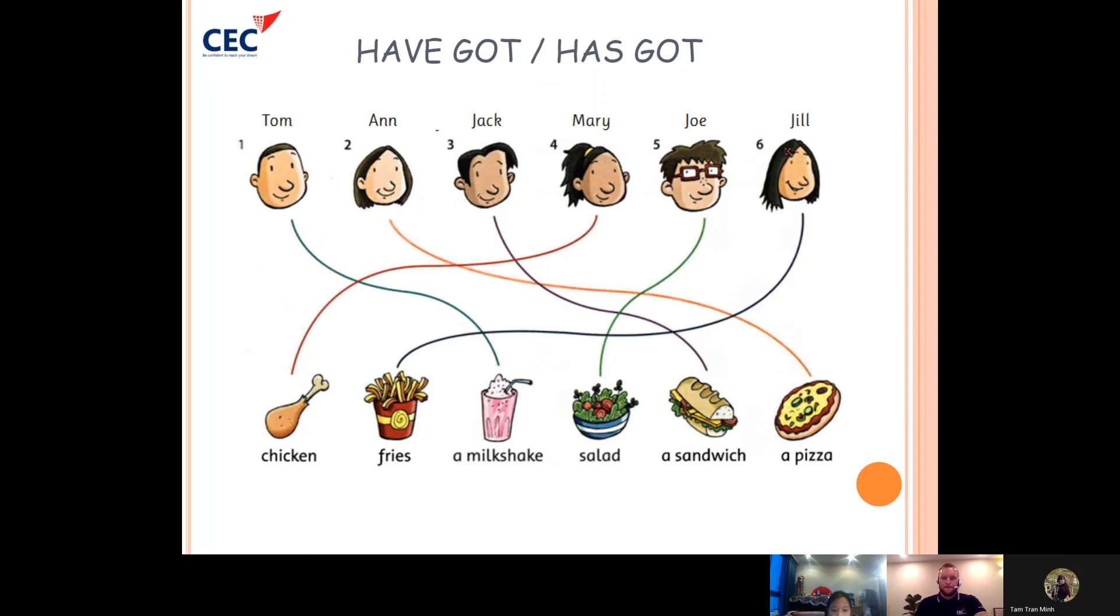What has Jack got? Jack has got a sandwich. What has Jill got? Jill has got fries. Nice.